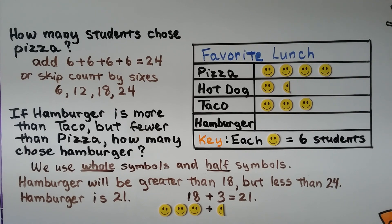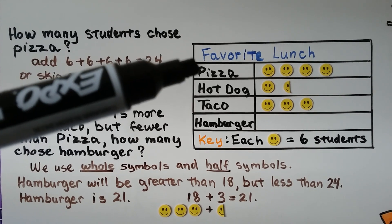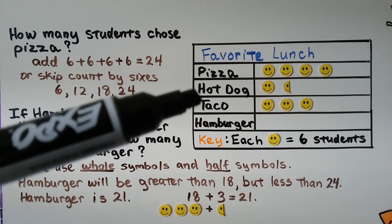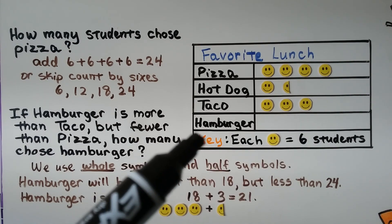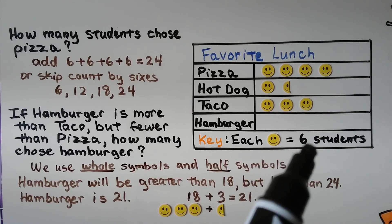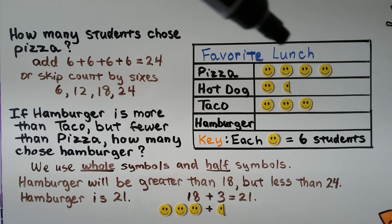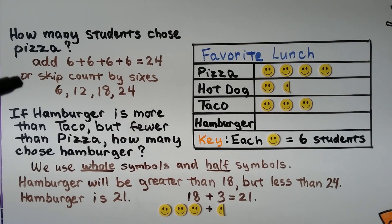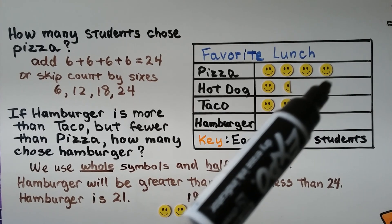Let's look at this picture graph about favorite lunch. Students were asked if their favorite lunch was pizza, hot dog, taco, or hamburger. Notice there's no information for hamburger — we'll do that in a minute. The key tells us that each smiley face is equal to six students. How many students chose pizza? We skip count by sixes: six, twelve, eighteen, twenty-four.